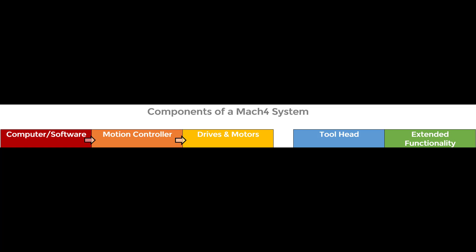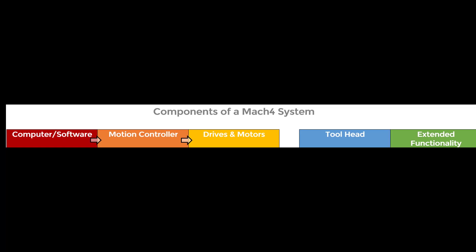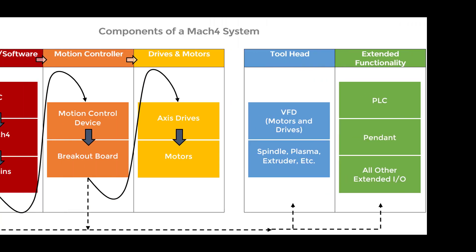So let's expand on those ideas a little bit. Computer and software includes a PC meeting the minimum specs to run Mach 4, Mach 4 itself — whether Hobby or Industrial — and plugins.